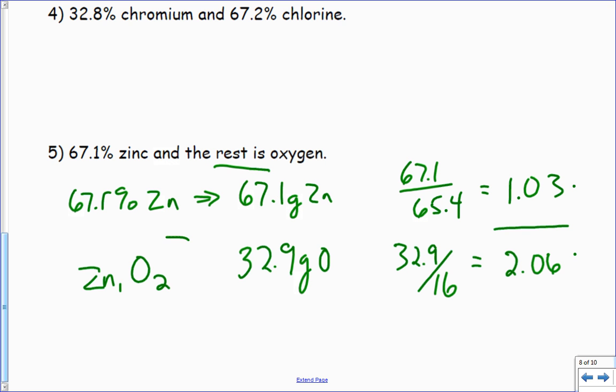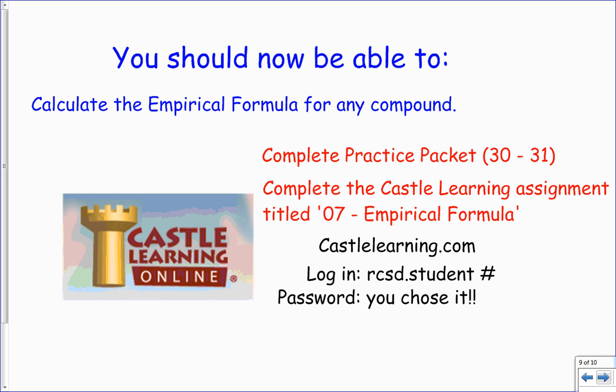So not only do we learn how to do empirical formulas, we learned how to do the grams into empirical formula. So it is going to be a little bit more complicated than just molecular formulas. We do have practice packet to do, 30 to 31, and you have another Castle Learning on just empirical formulas. Quick five questions, go to town. Kept it under 10 guys. Sorry it took so long. See you tomorrow.